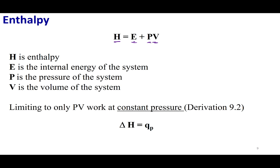One important thing to note: enthalpy and heat are two different things. Enthalpy is H; heat is Q. However, the change in enthalpy equals the heat if pressure is constant. In thermodynamics, a subscript means I'm keeping that variable constant — so Q_P means the heat at constant pressure, and Q_V means the heat at constant volume.